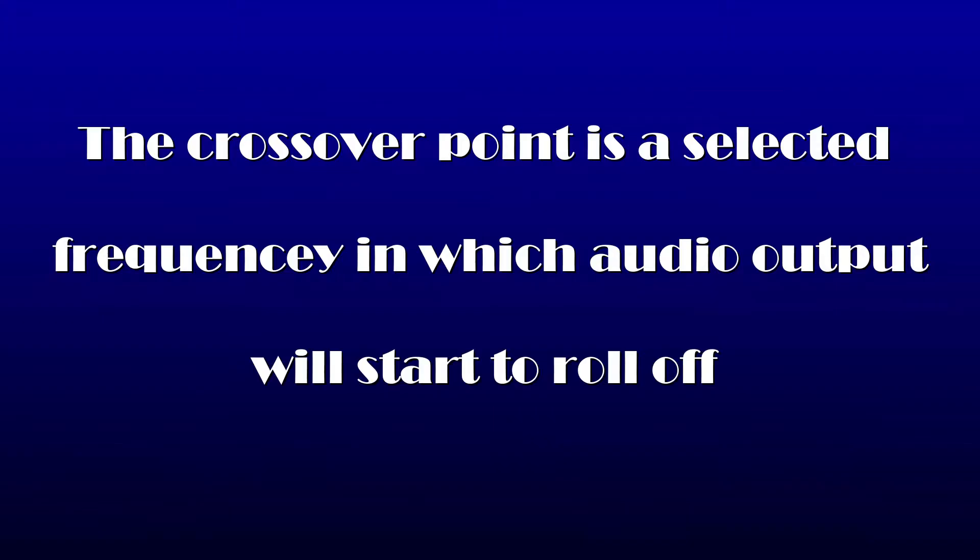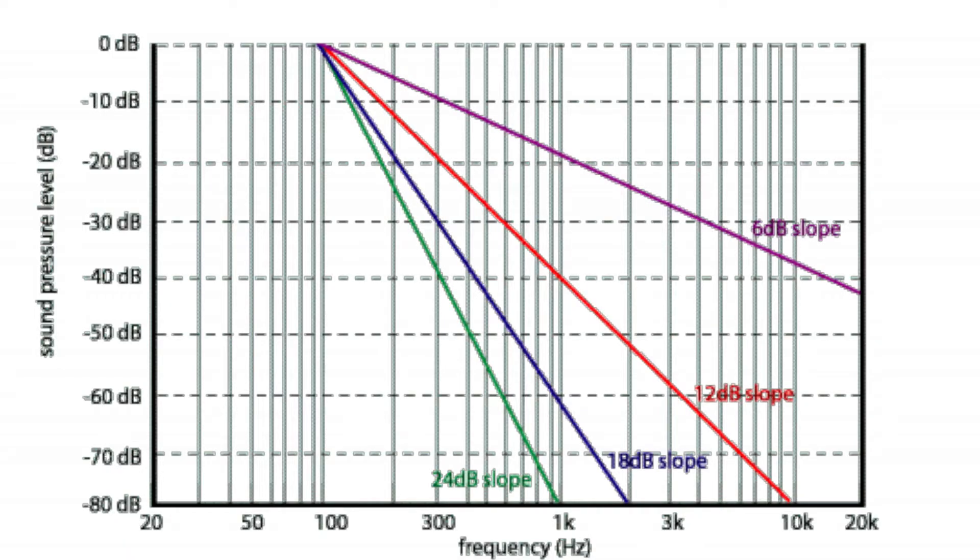There are two things you have to keep in mind when it comes to crossovers: the crossover point and the slope. Let's go over crossover point first. Say we choose 80Hz for the sub and the mid — high pass on the mid, low pass on the sub. Since we chose 80Hz, that doesn't mean that speaker won't play anything below that; that all depends on the slope. 80Hz will be the frequency at which they start rolling off. The most common slopes are 6 dB, 12 dB, 18 dB, and 24 dB.